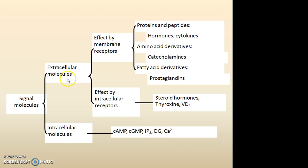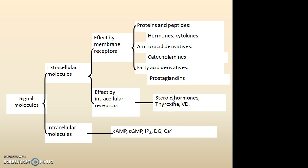Extracellular molecules show their effect through a membrane receptor or intracellular receptor. Through the membrane receptor, the effects are shown by proteins and peptides, amino acids and their derivatives, and fatty acids and their derivatives. Whereas through the intracellular receptor, steroid hormones show their pharmacological effect.